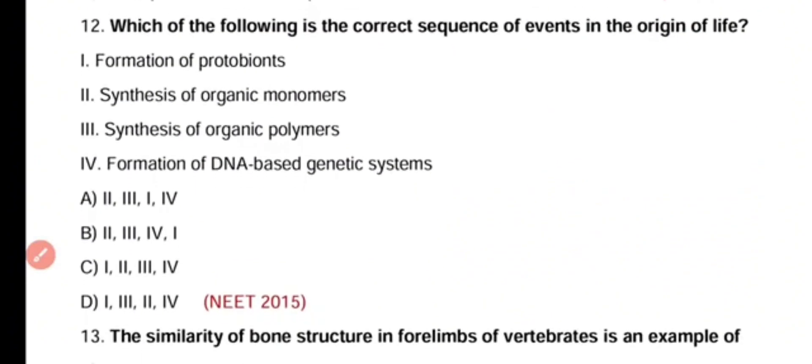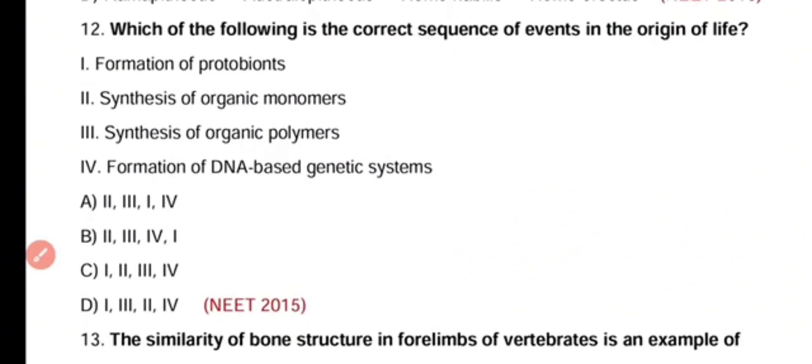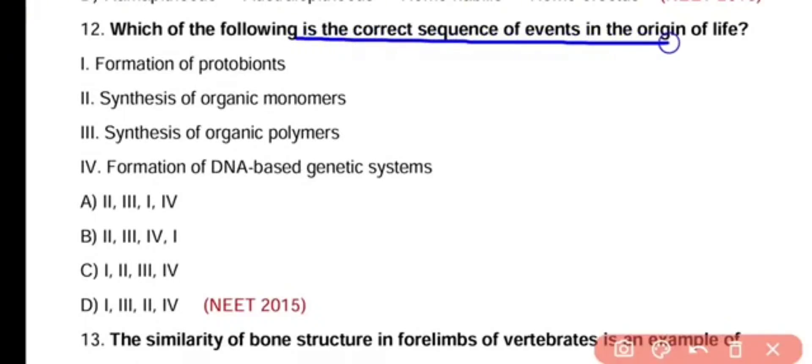Question number 12. Which of the following is the correct sequence of events in the origin of life? The steps given are: (1) formation of protobionts, (2) synthesis of organic monomers, (3) synthesis of organic polymers, (4) formation of DNA-based genetic system.